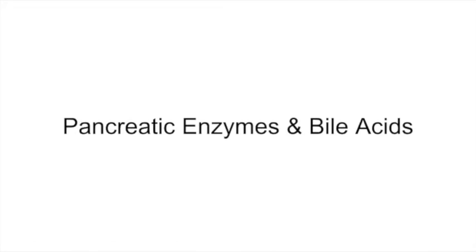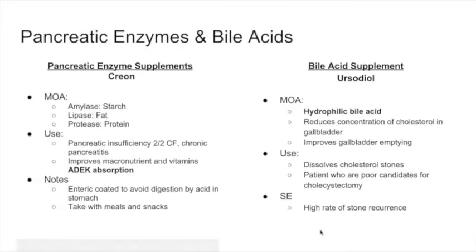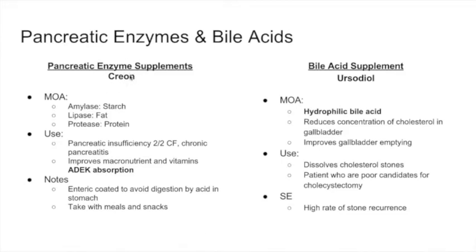That concludes our discussion of nausea and vomiting. The next topic is pancreatic enzymes and bile acids. We will talk about pancreatic enzyme supplements — the brand name is Creon. It contains the three enzymes you need: amylase, lipase, and protease. Amylase breaks down starch, lipase breaks down fat, and protease breaks down proteins.